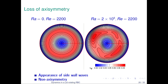Once we start heating the bottom and cooling the top, we observe waves generated near the sidewall — seen in the azimuthal velocity contours — and we can infer that these sidewall waves break the axisymmetry of the system.